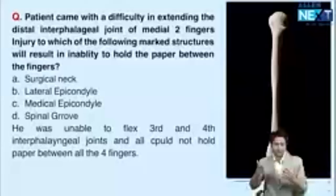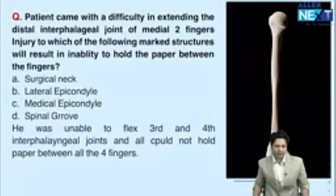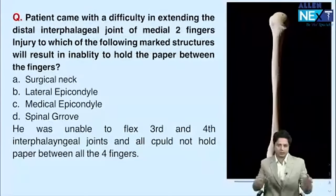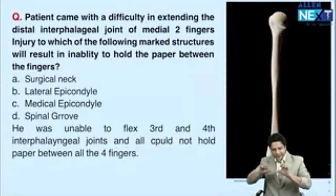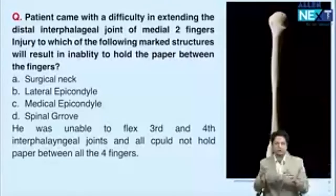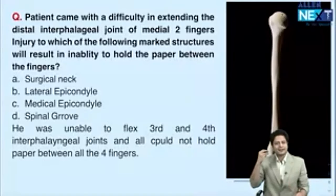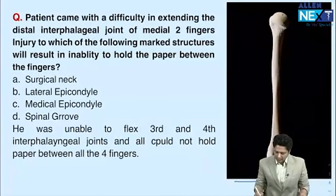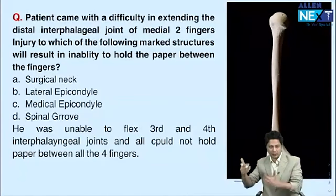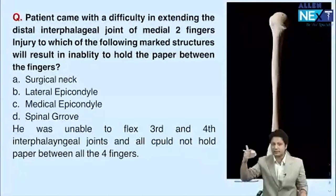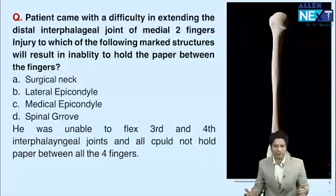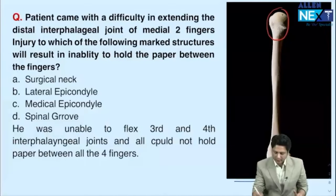Now discussing orthopedics questions from INI CET 2023. Around seven to eleven questions are asked in orthopedics integrated with anatomy. Question one is asked every year — identifying the nerve likely injured at a particular segment of the bone. Key points: proximal humerus fracture injures the axillary nerve; mid-shaft humerus fracture injures the radial nerve as it passes through the spiral groove; medial epicondyle injury affects the ulnar nerve.